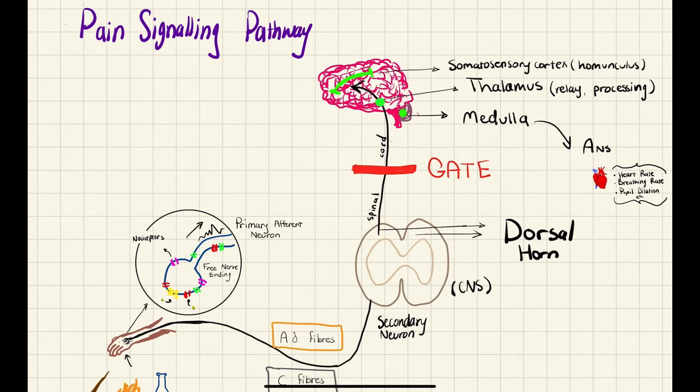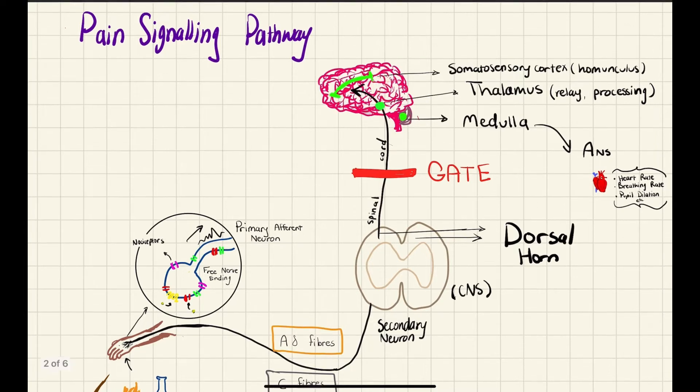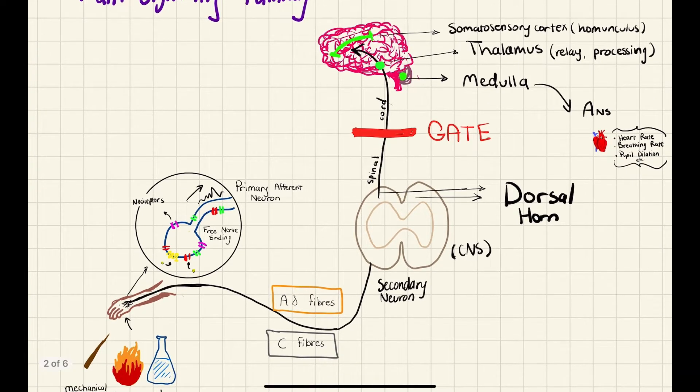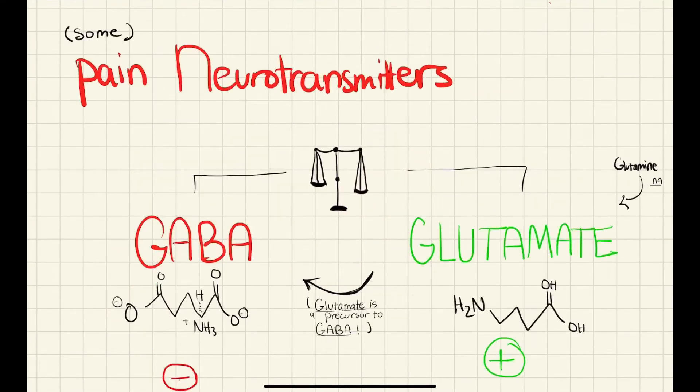Then you can also have the thalamus next, which is just a bit of relay processing. And finally, somatosensory cortex. It probably shows a bunch of different spots, too. But these are just some broad categories. But in the somatosensory cortex, in the homunculus, it basically localizes the pain to a specific area of the body and determines where it came from. So for example, here, it would know that it came from the hand.